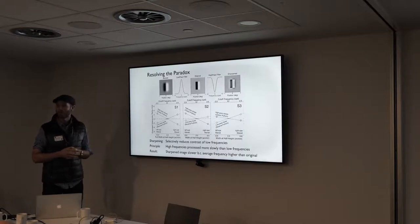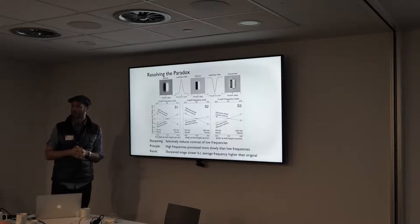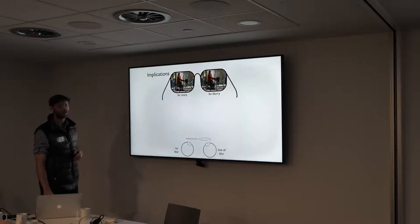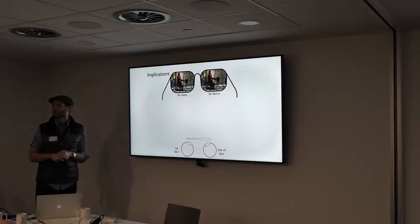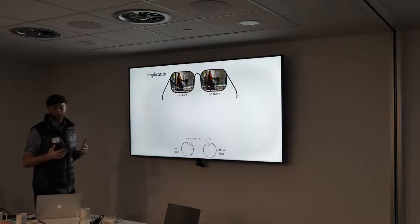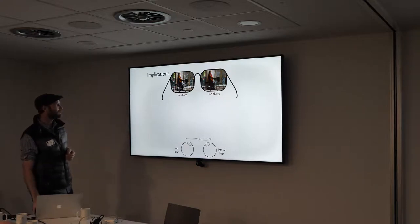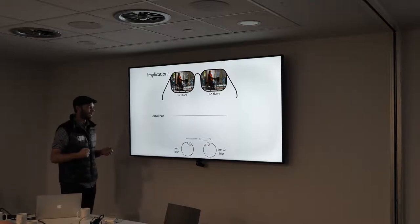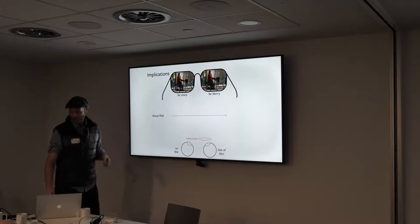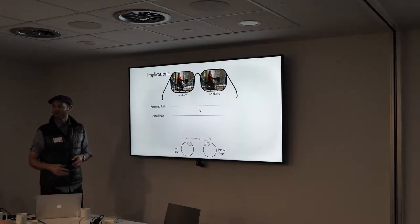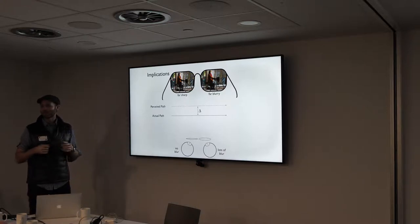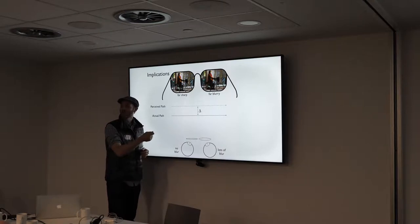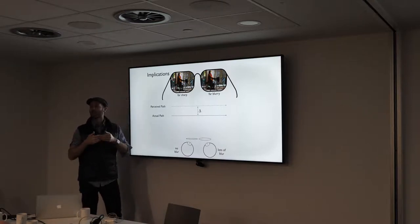We next wanted to sort out whether this is just a laboratory phenomenon or has real-world implications. Imagine you're behind the wheel of a car pulling up to an intersection and a bike goes past. You perceive it farther away than it actually is because one eye is blurry and one eye is sharp — causing a misestimation of depth. If it's moving at constant speed, you'll see a constant offset in depth.